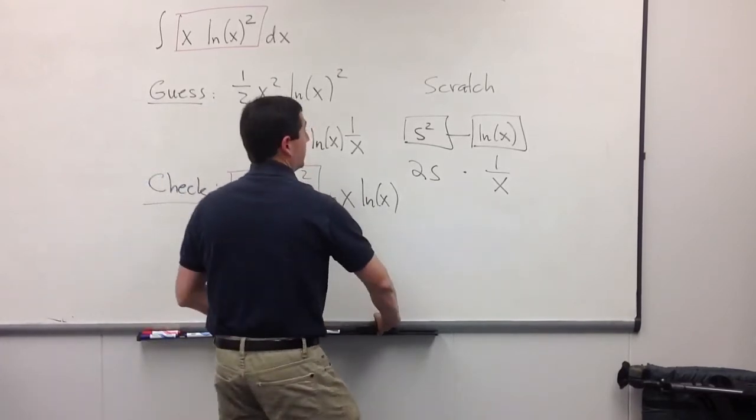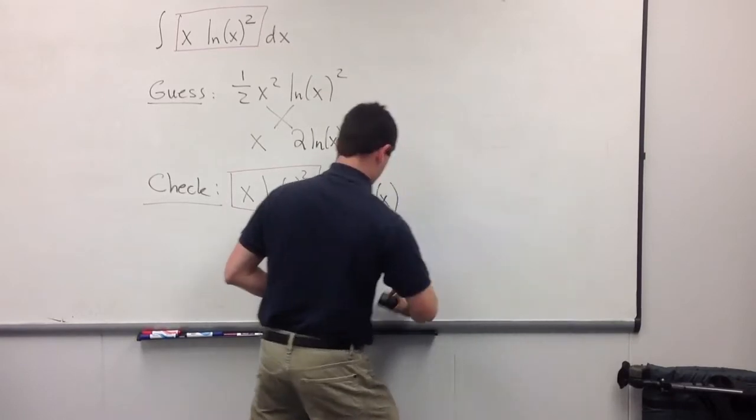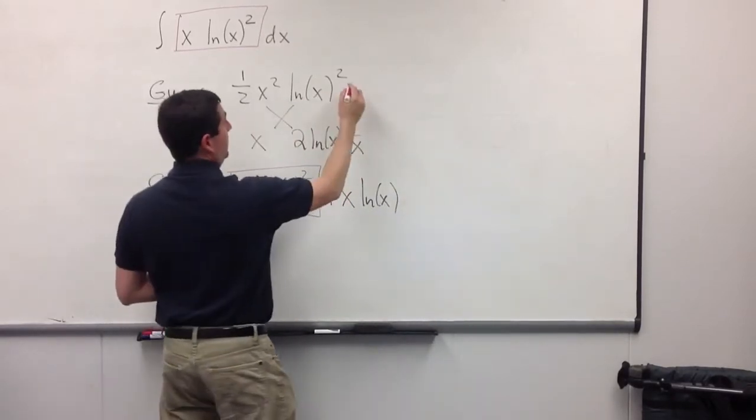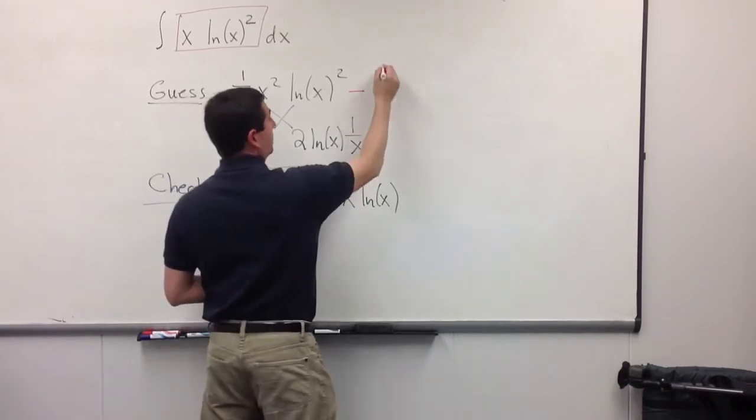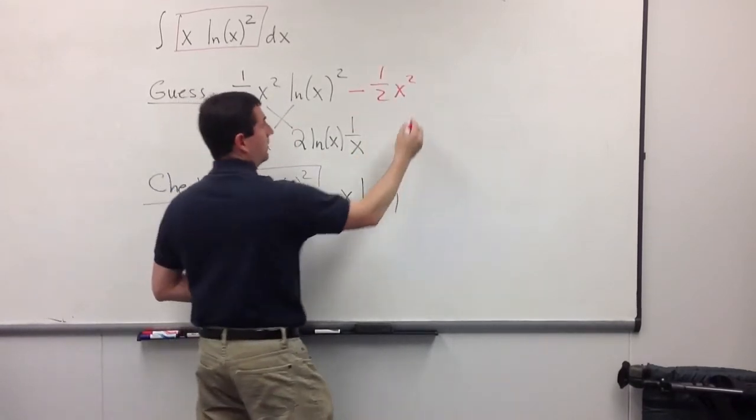So, let's erase from this scratch work. Make a little room. So, up here, I'm going to subtract, and again, I anti-differentiate the x, and I keep the ln of x the same.